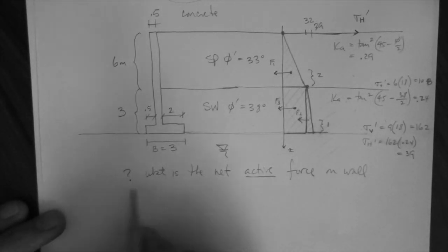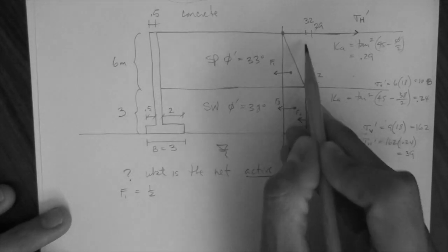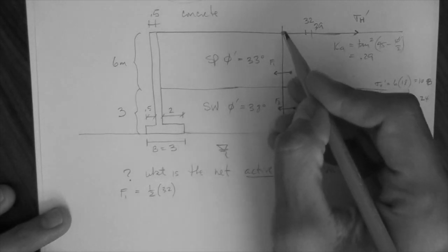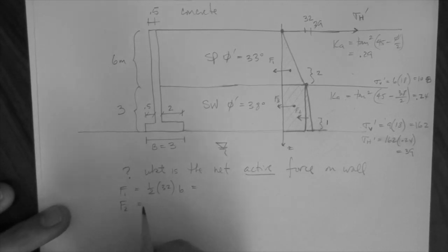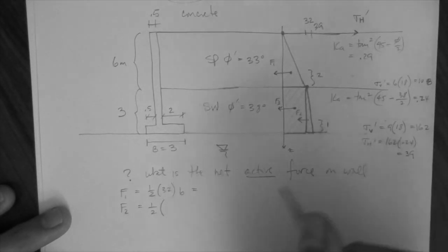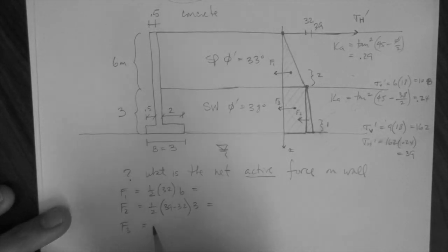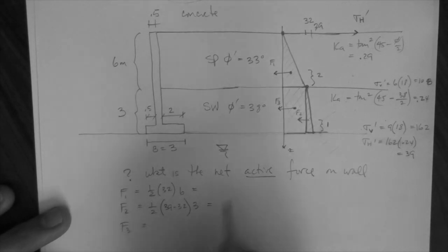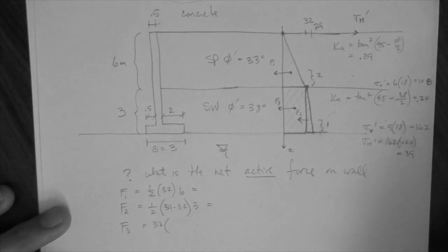So I'm going to calculate the forces here now. F1 is one half base times height. What's the base? 32. And the height? 6. F2 is one half. The base is 39 minus 32. And the height is 3. And then F3 is base times height. So the base is 32 and the height is 3.